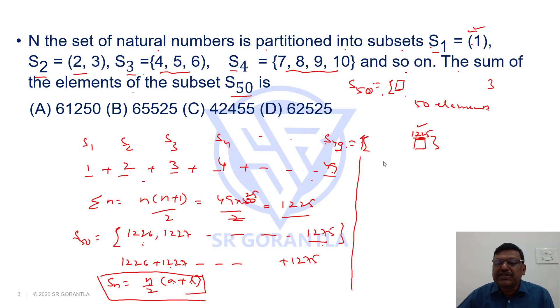If I apply this formula here, so sum of this S50 sum will be 50 by 2 into a, the first element, that is 1226, plus the last element, 1275.